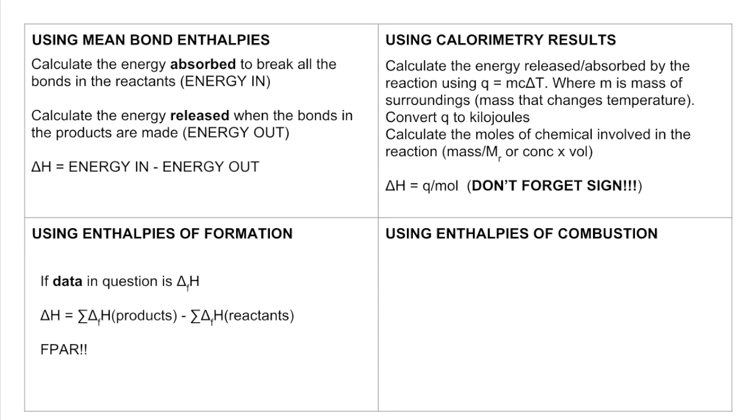And finally using enthalpies of combustion now. Again, look closely in the question. If the data in the question is enthalpy of combustion, irrespective of the type of equation or reaction that you're having to calculate the enthalpy change for, we can use the same equation as before but it's the other way around. So the enthalpy change for the reaction is the sum of the enthalpies of combustion of the reactants minus the enthalpies of combustion of the products.